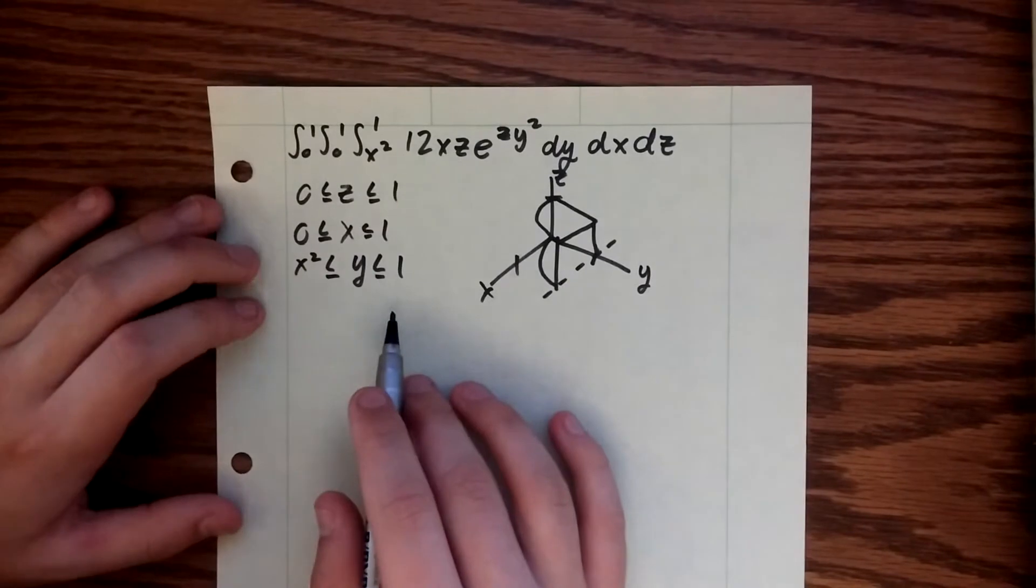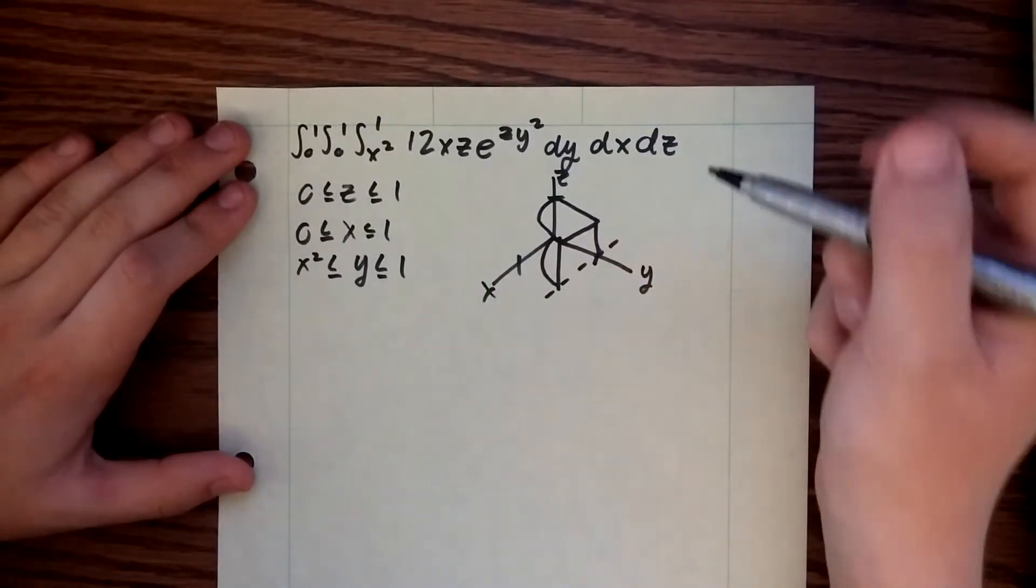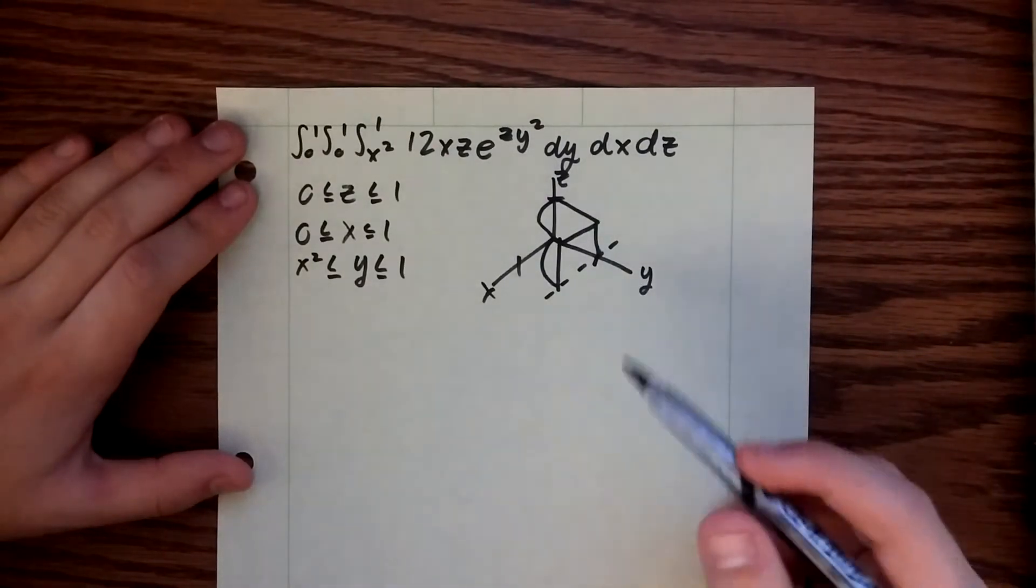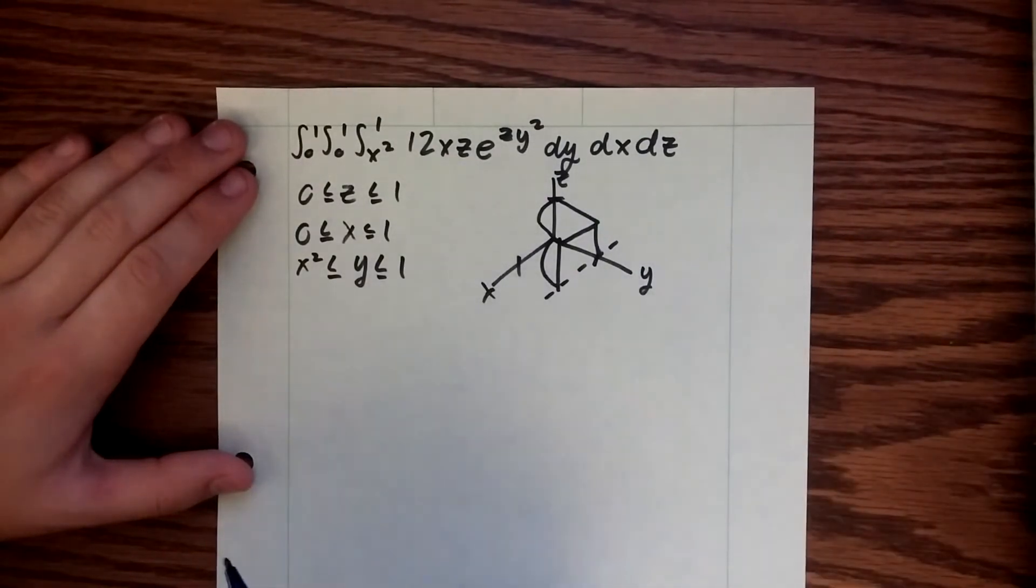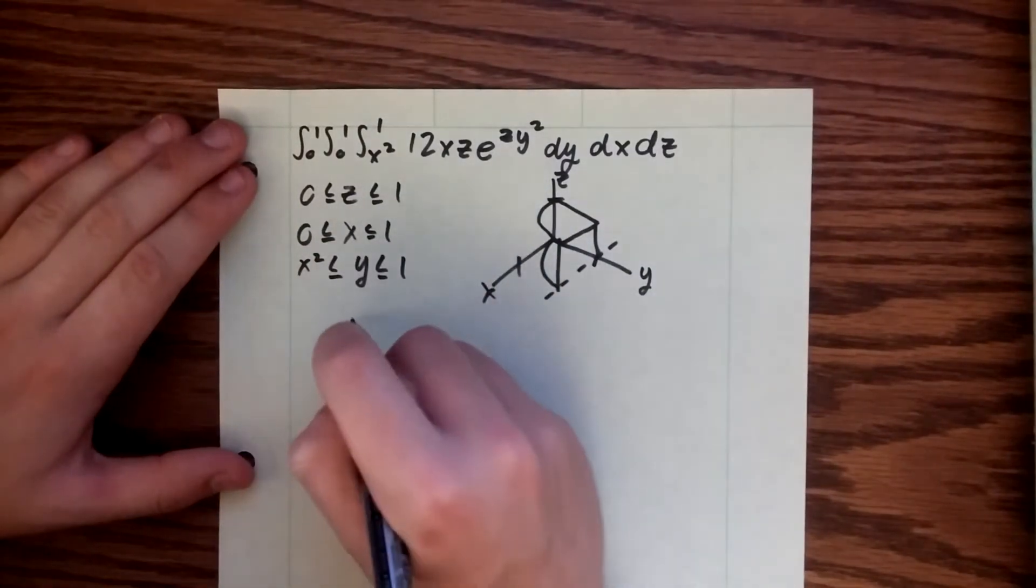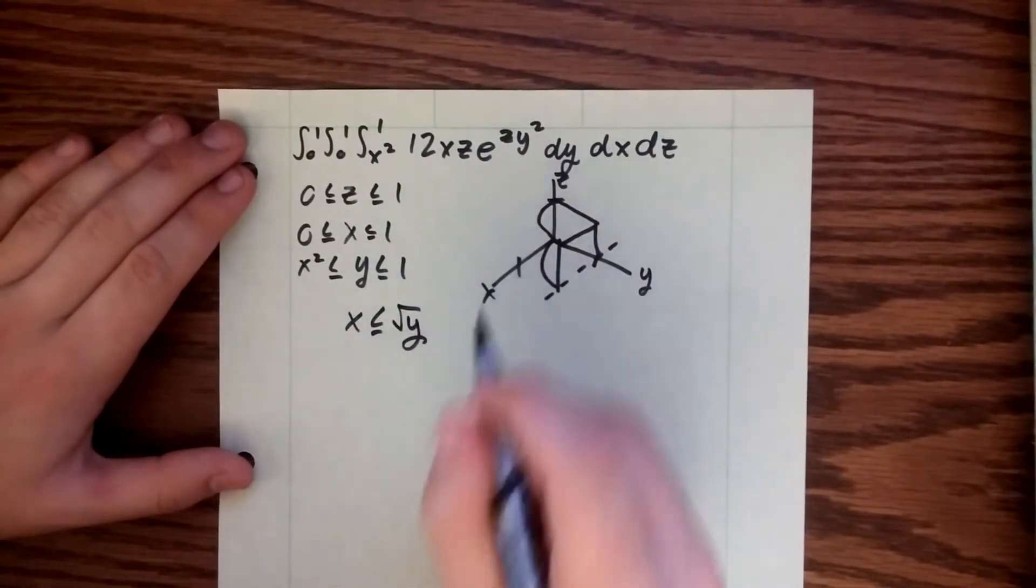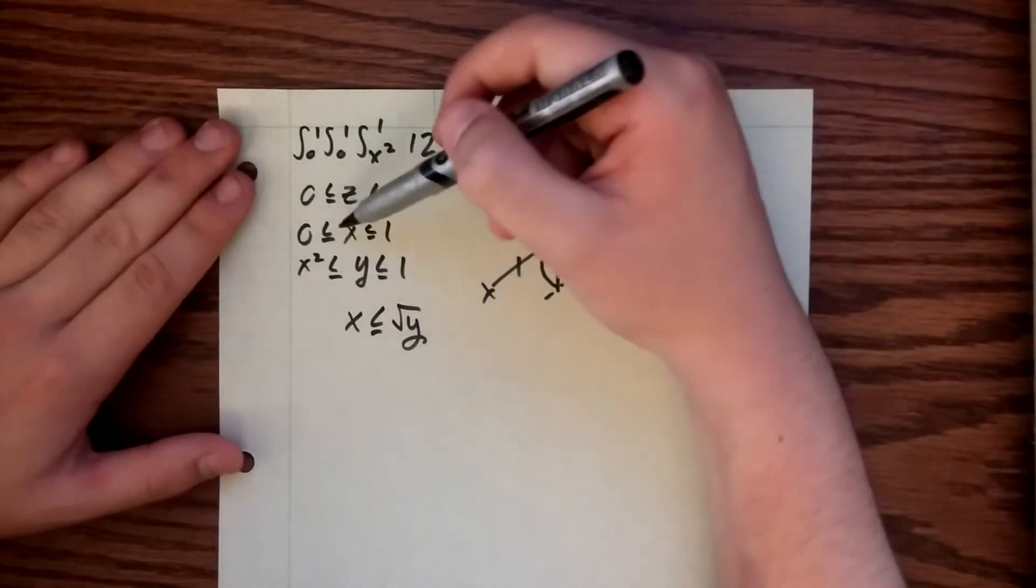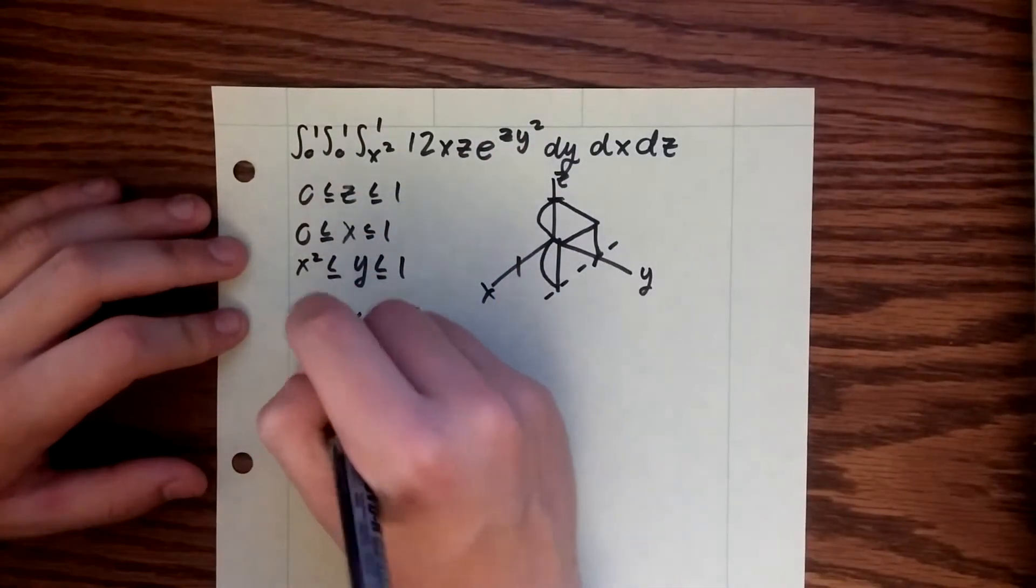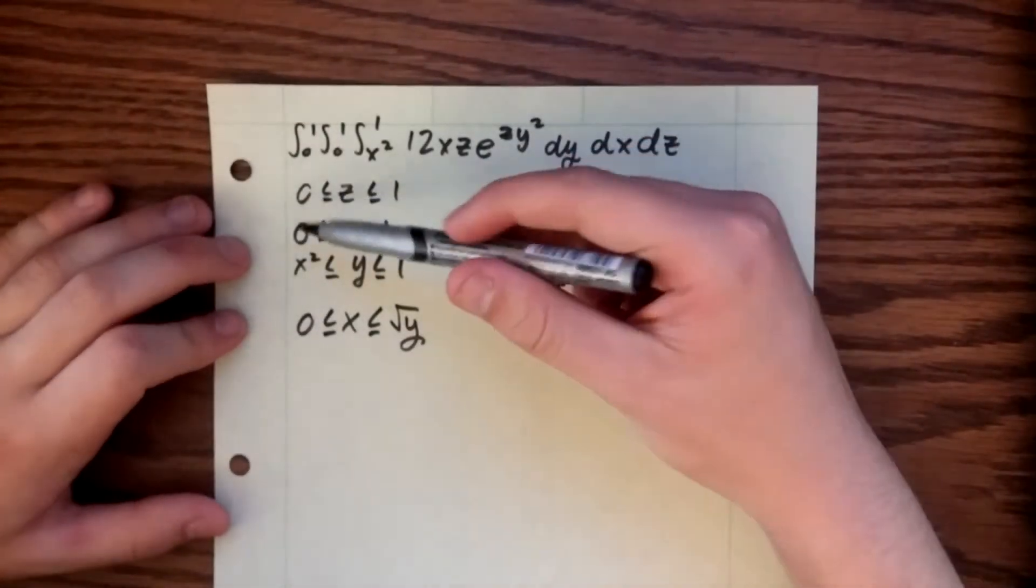So what we're going to do next is, since we're going to change it to the order of dx dy dz, our first bounds need to be x in terms of y. To do that, we just solve this equation right here and we end up with x is going to be less than square root of y, and we know the lower bound on x already given here is zero.